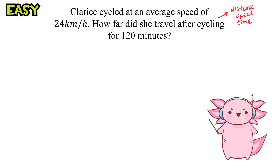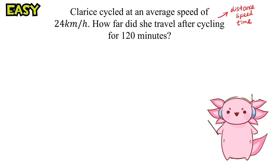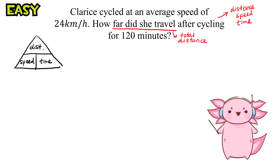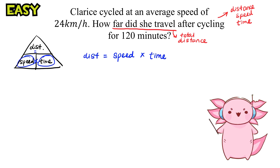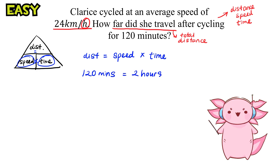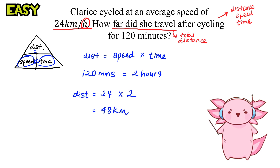This question is testing on the relationship between distance, speed, and time. The question asks us to find how far Claire cycled, which is the total distance. From our magic DST triangle, distance equals speed times time. Because it is 24 kilometres per hour, we convert 120 minutes into hours, which is 2 hours. The distance equals 24 times 2, which is 48 kilometres.